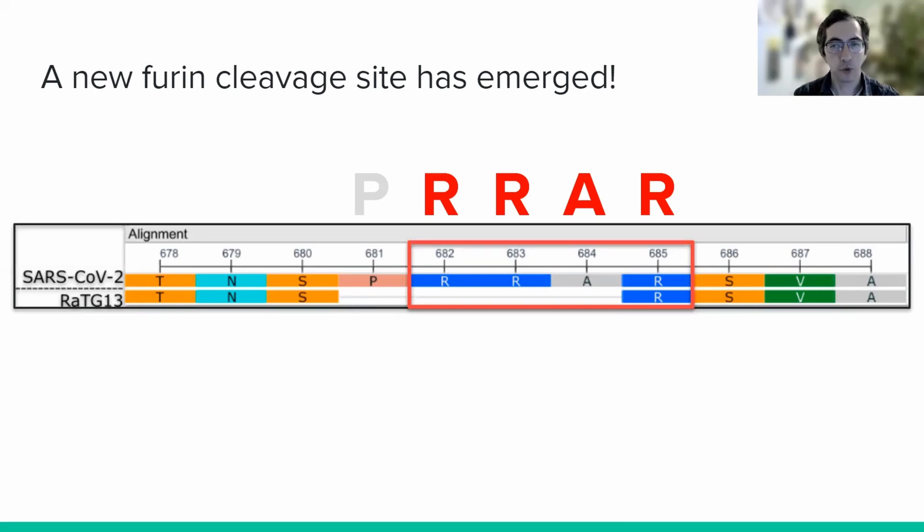One protease, called furin, is known to cleave proteins when there is an amino acid sequence of RRAR. If we look carefully at the SARS-CoV-2 spike protein, we can see that the insertion of PRRA creates a furin cleavage site at position 682.